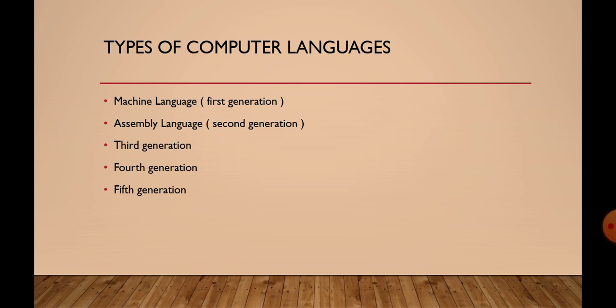Machine language, the first generation language, is regarded as a low-level language. Assembly language is also regarded as a low-level language, but the other three are regarded as high-level languages.